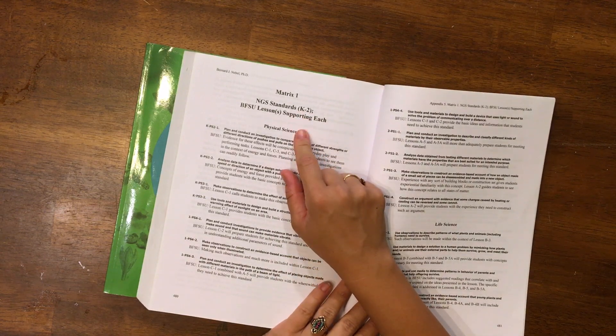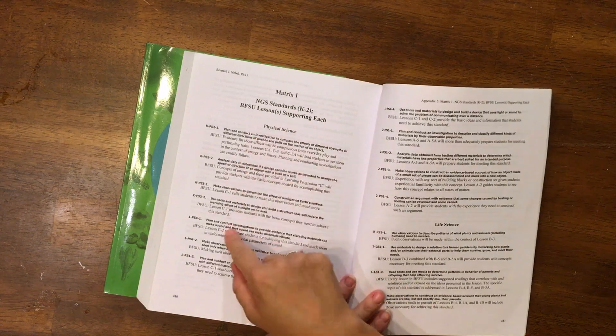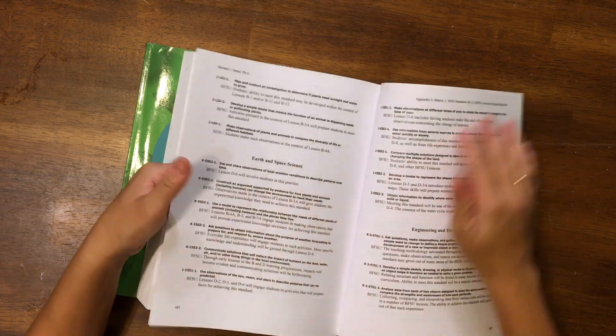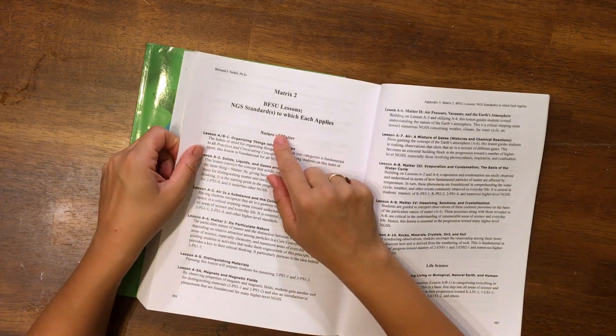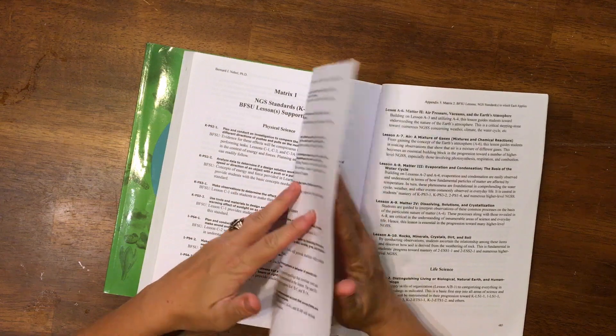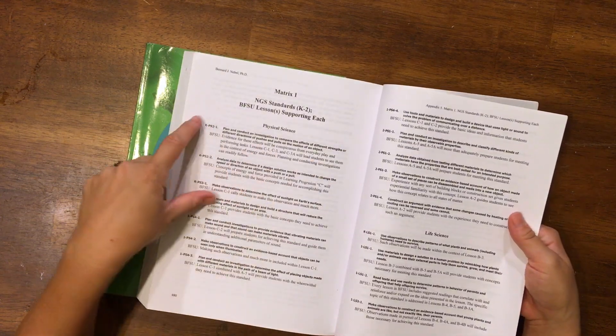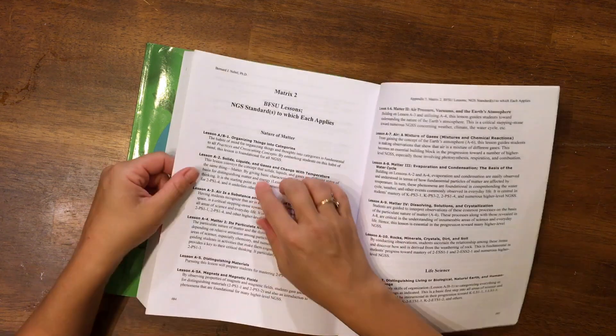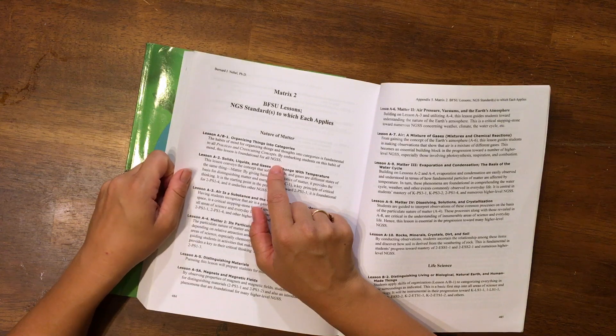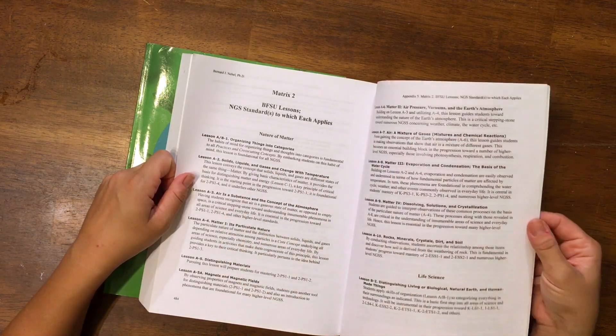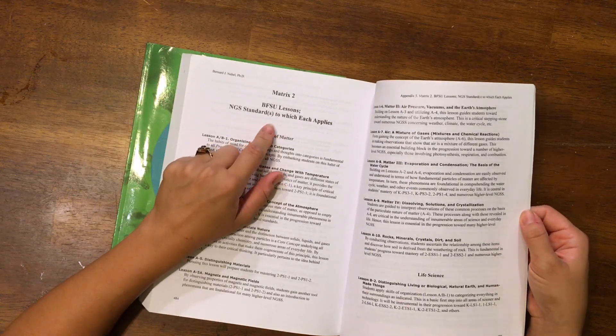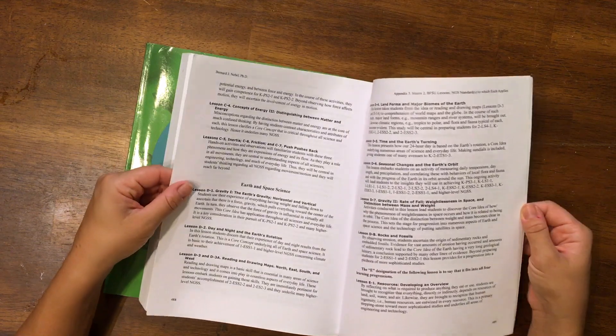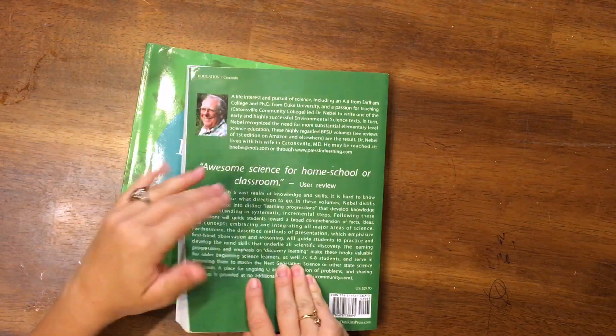In the matrix, this is how each lesson correlates to the NGS standards for K through second. And matrix two, this is each standard, and then it goes through which lesson correlates to that standard. And then this one has the lesson and how it correlates exactly to each standard. I find this so great. Make sure you get one of the newer copies because the older copies don't have this. And that is so great if you're trying to stay on track at all with national standards.